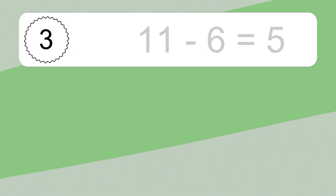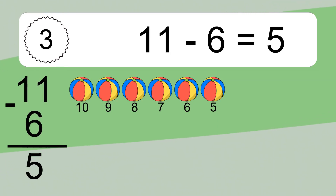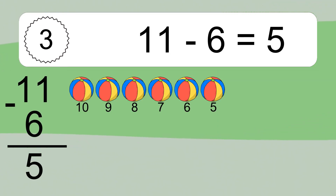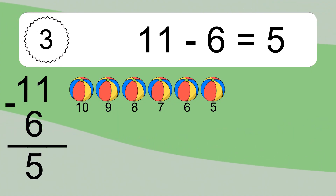11 minus 6 equals what? 11 minus 6 equals 5. Let's count it: 10, 9, 8, 7, 6, 5.